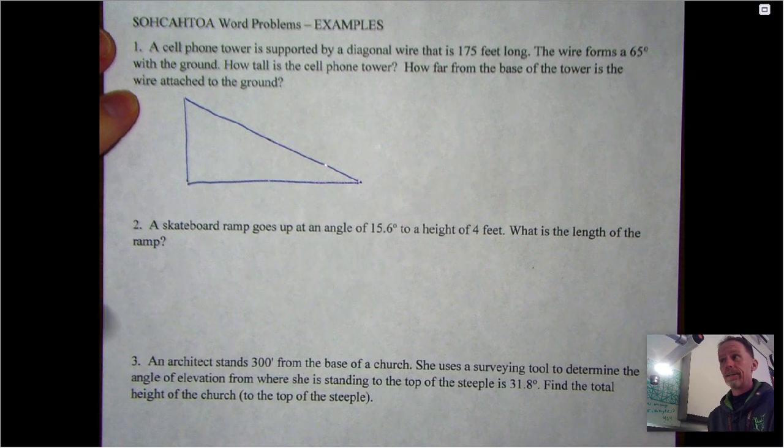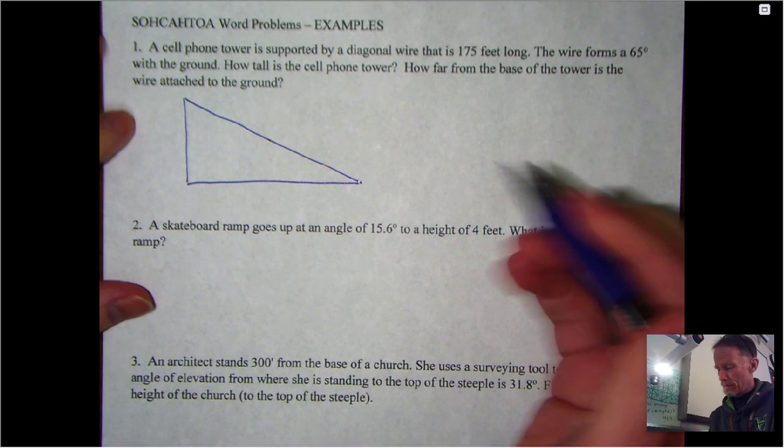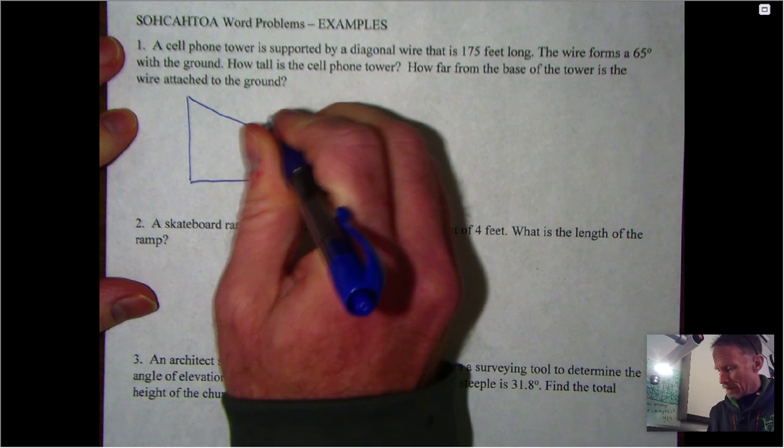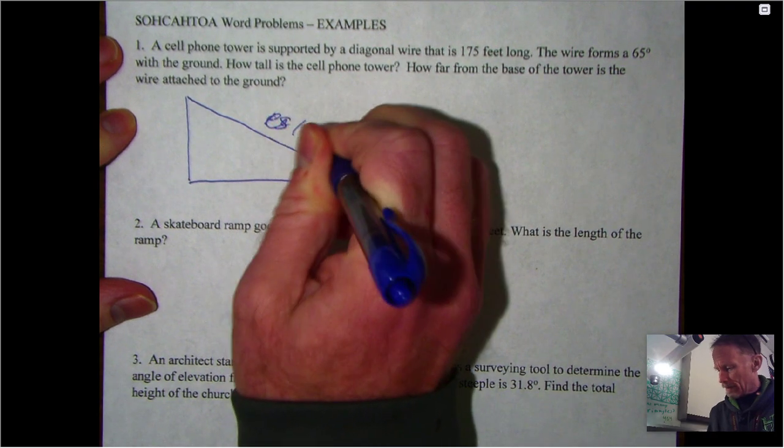If I'm drawing this: there's my tower, there's the diagonal wire, and there's the ground. If you want to be fancy about it, god bless, go forward, but you don't have to be fancy.